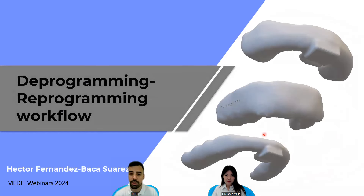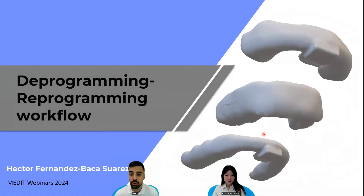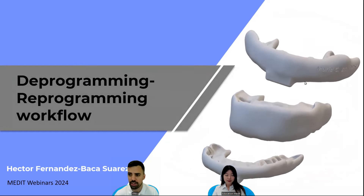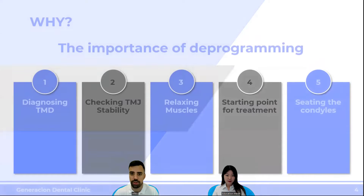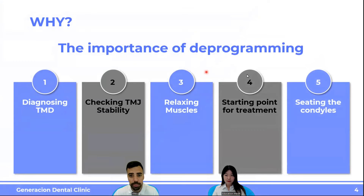This time I'll be talking more about deprogrammers. I'm going to show a workflow — the workflow that I use — and we'll see when and why we're going to be using these kinds of deprogrammers. These are some anterior bites that the MediSplint app can do. Those are the kinds of splints you can use as deprogrammers, with the platform in the front, and I'll be showing how to design them.